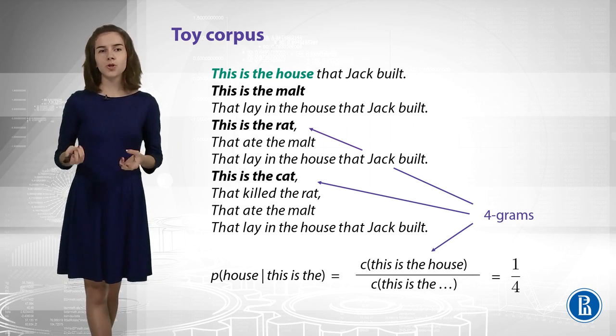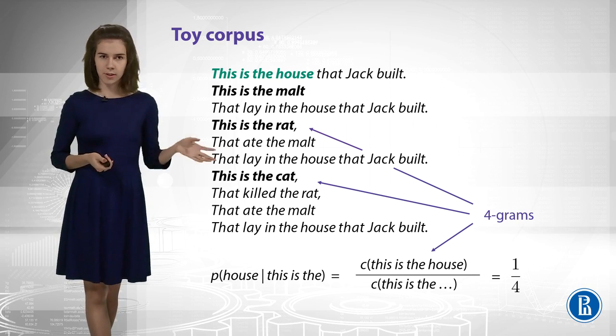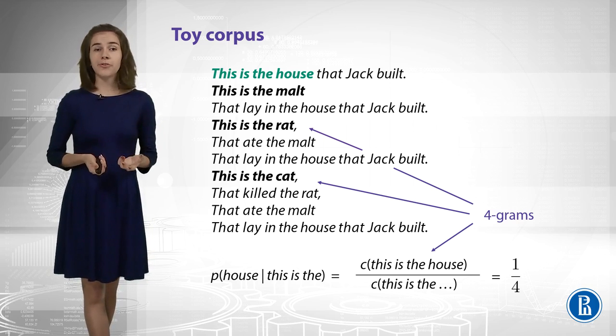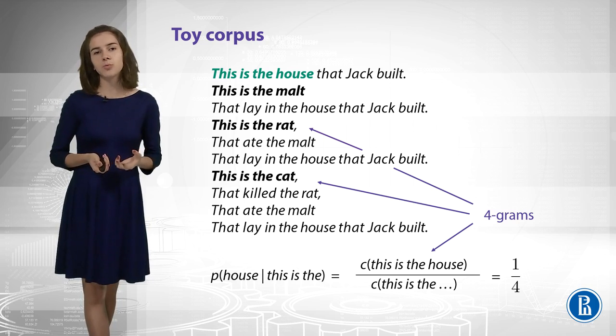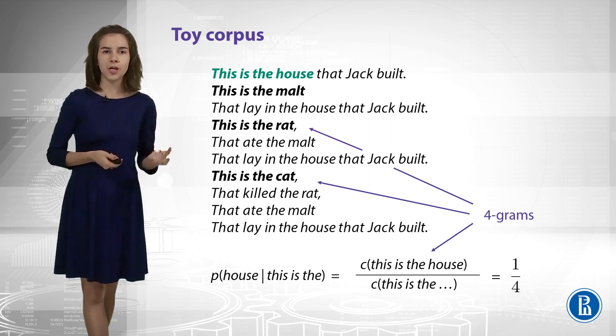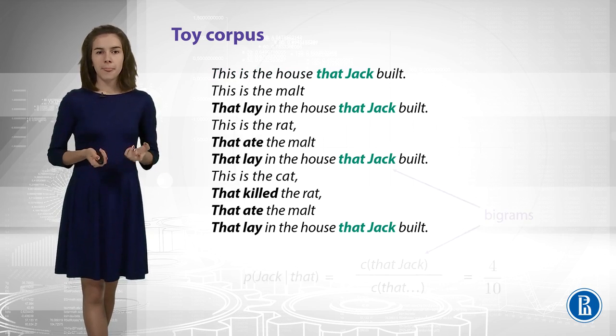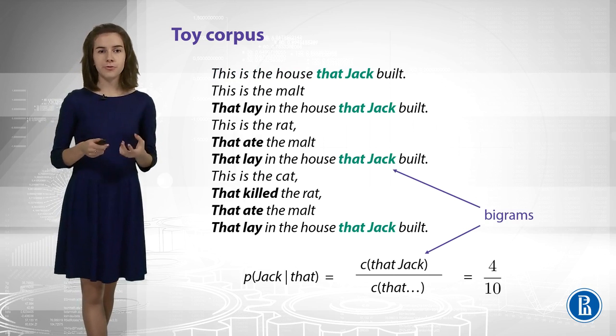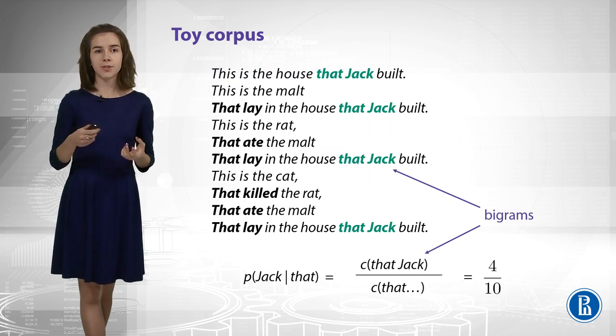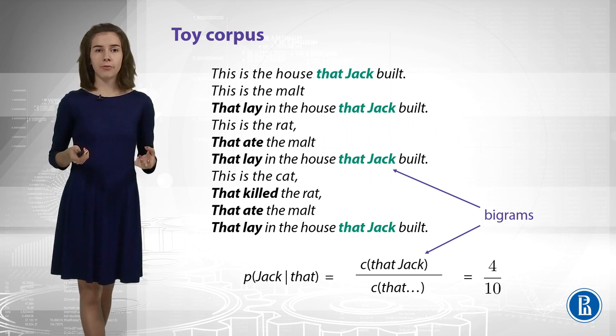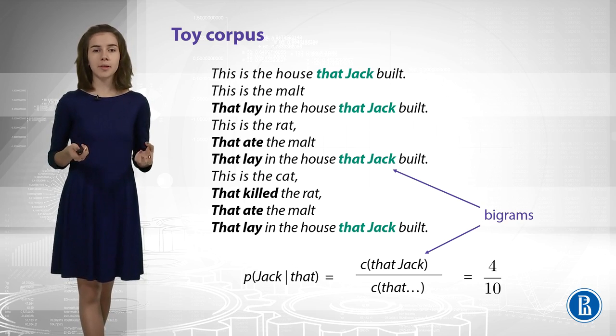And we can try to choose the best n, and we will speak about it later. But for now, what about bigrams? Can you imagine what happens for bigrams? For example, how to estimate probability of 'Jack' given 'built.' Okay, so we can count all different bigrams here, like 'that Jack,' 'that Lay,' etc. And say that only four of them are 'that Jack.' It means that the probability should be 4 divided by 10.